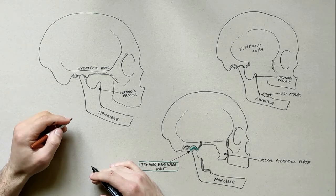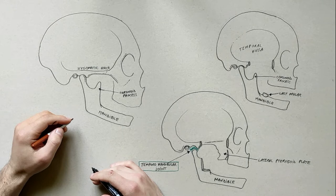There are four muscles of mastication: the masseter, temporalis, lateral pterygoid, and medial pterygoid.